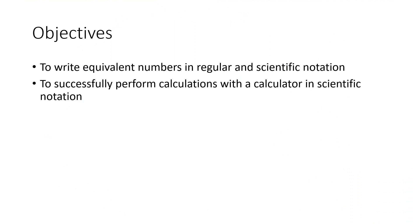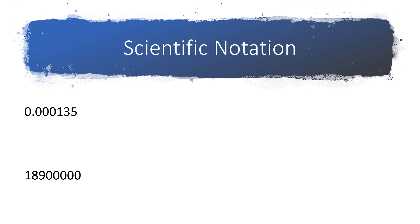Our objectives for this section are to write equivalent numbers in both regular notation and scientific notation, and then to do calculations using a calculator that involve numbers in scientific notation. So scientific notation is a way of taking these two numbers that are already written here and writing them in a little bit more concise format. Notice that most of the digits in these numbers are zeros. We're basically going to eliminate the zeros.